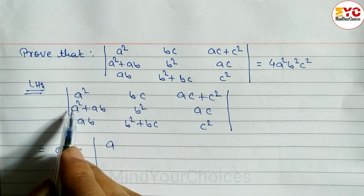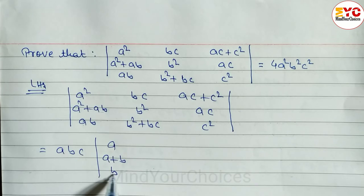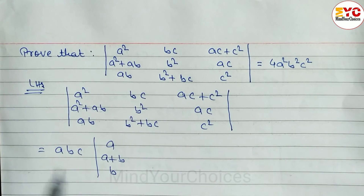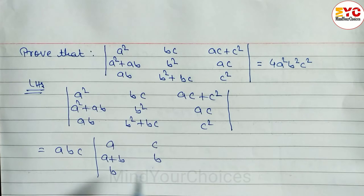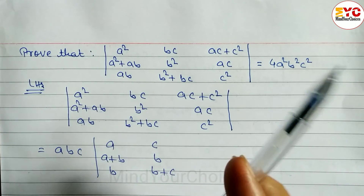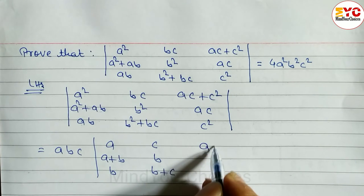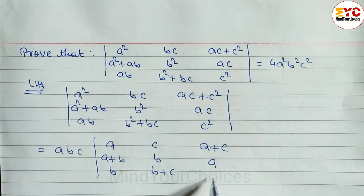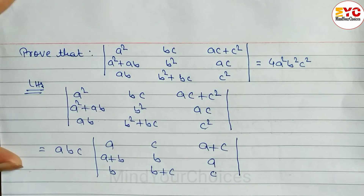After taking 'a' common from the first column, remaining elements are: a, a+b, and b. From the second column taking 'b' common, remaining: c, b, and b+c. From the third column taking 'c' common, remaining: a+c, a, and c. So we now have the factor abc outside and a simplified 3×3 matrix.